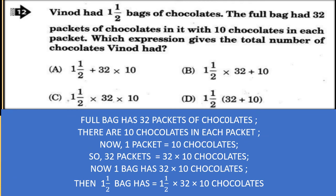Wee-know had one and a half bags of chocolates. The full bag had 32 packets of chocolates in it, with 10 chocolates in each packet. One packet has 10 chocolates, so 32 packets has 32 × 10 chocolates. One bag has 32 × 10 chocolates, so one and a half bags has 1½ × 32 × 10 chocolates. The correct option is C.